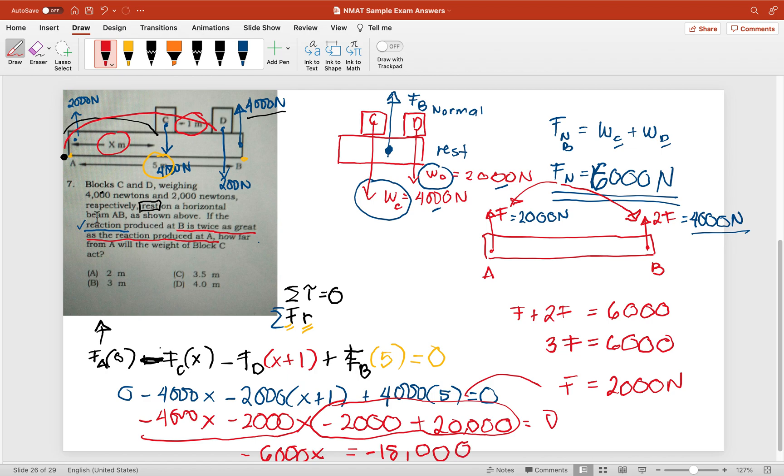So divide by 6,000. X equals 18,000 divided by 6,000, which is 3 meters. So this is our answer, letter D.